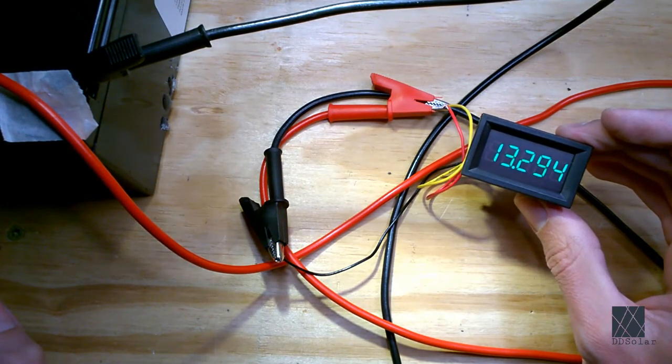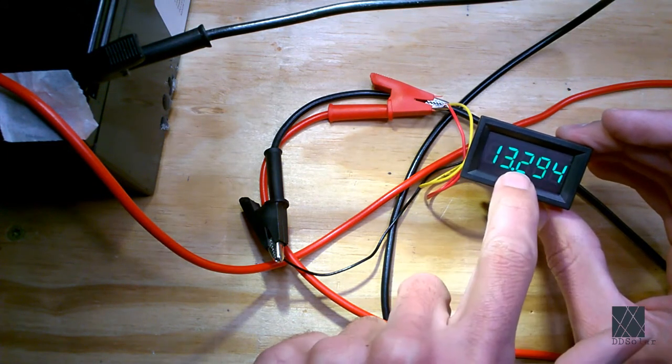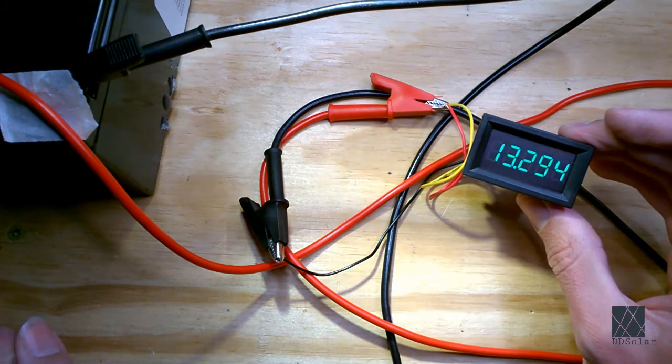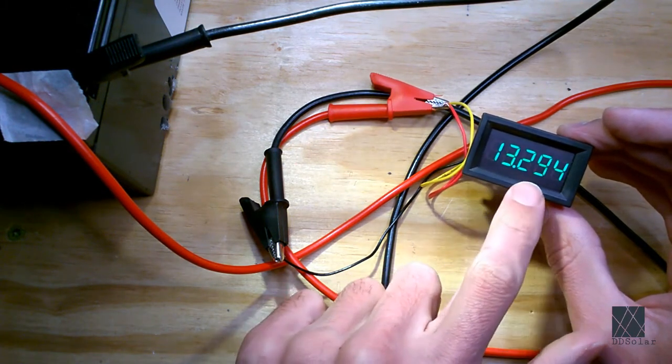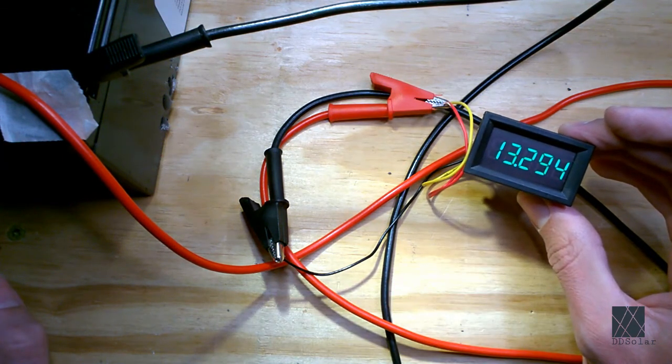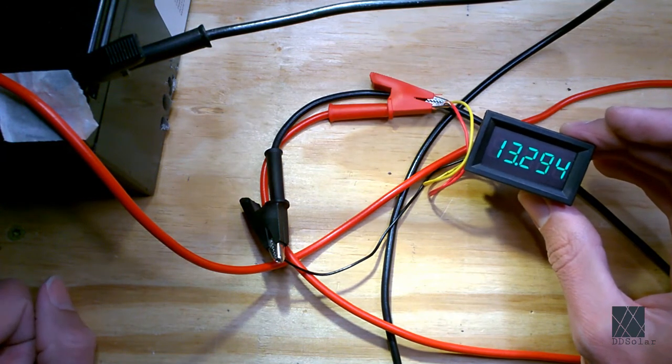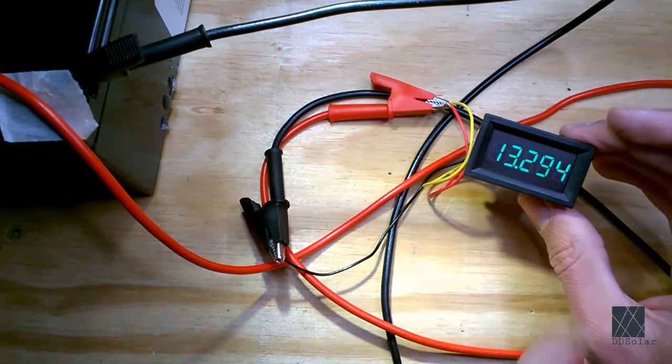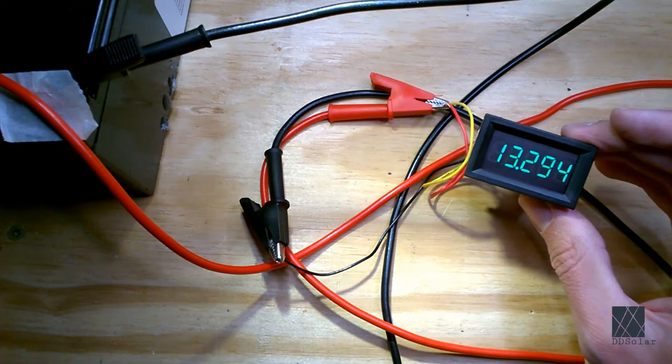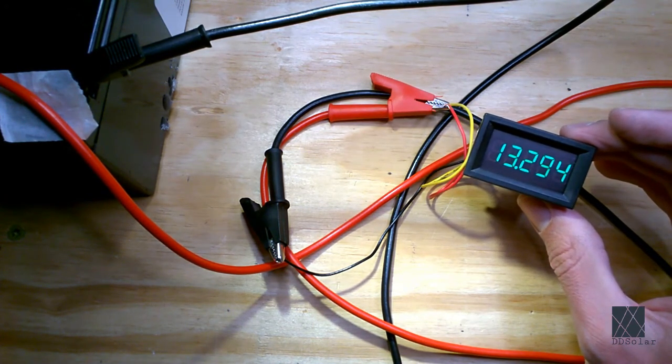So a cheaper voltmeter would say 13.2 or I might say 13.3 by rounding the nine up into the two and making that a three. And if you have a two digit voltmeter that shows the voltage to two digits it would probably just say 13.29. But this voltmeter is showing it to three decimal places which means it'll be very very sensitive and it will record very small changes in the battery voltage which is what I want.